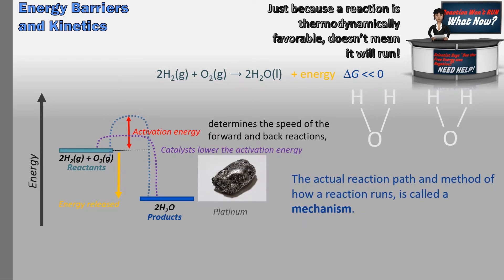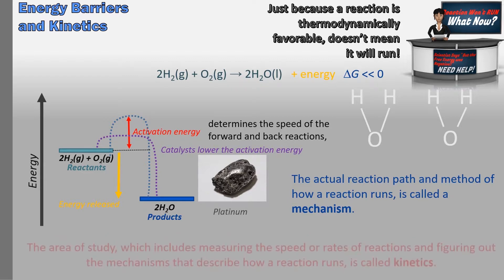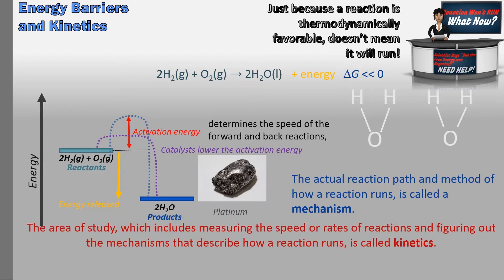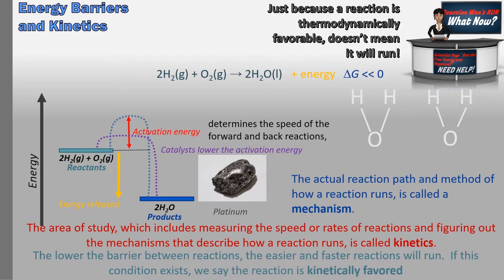The actual reaction path and method of how a reaction runs is called a mechanism. The area of study, which includes measuring the speed or rates of reactions and figuring out the mechanisms, is part of chemistry that we call kinetics. The lower the barrier between reactants and products, the easier and faster reactions will run. If this condition exists, we say that the reaction is kinetically favored.